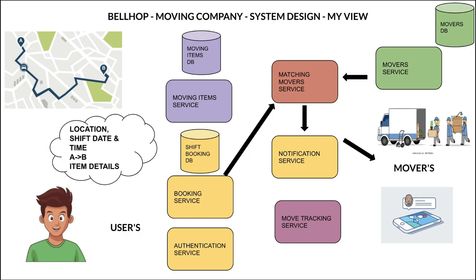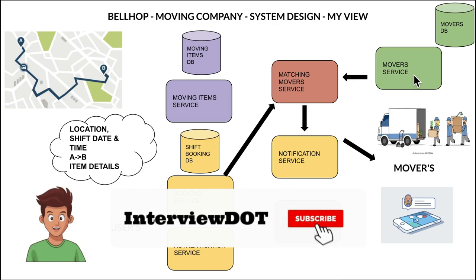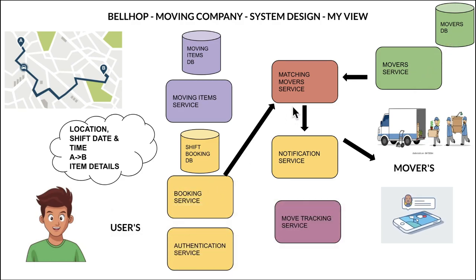Moving items such as couch, TV, fridge, and washing machine are also captured. On the other side, there are truck drivers and the team who will help users with shifting, and their truck details are captured by the mover service. Once booking is completed, a matching mover service pulls the booking information and finds the availability of movers, trucks, and team members. It applies an algorithm to find who is available and what vehicle is available, then notifies both users and movers.